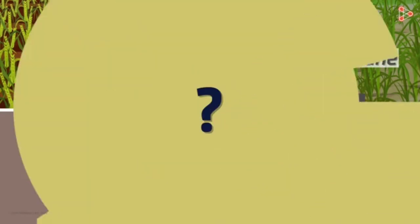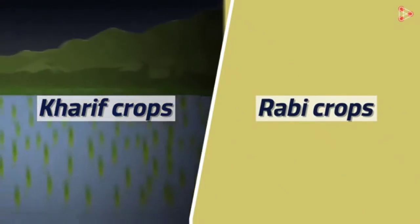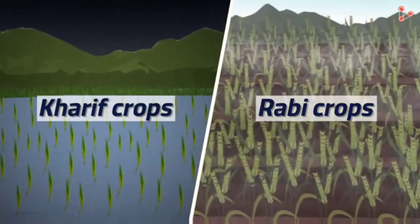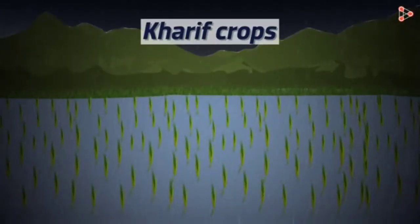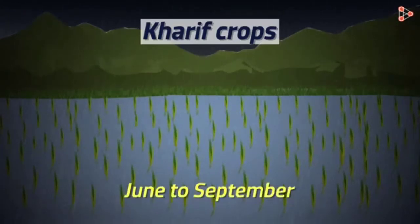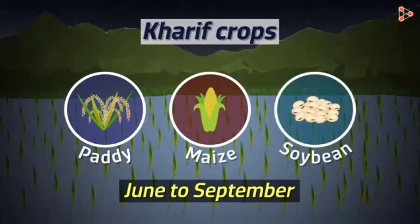Can you guess which two types of crops are grown in India? The two major crop seasons in India are the Kharif crops and the Rabi crops. The Kharif crops are sown in the rainy season, while the Rabi crops are sown in the winter season. The rainy season in India spans from June to September. Crops grown in this period include paddy, maize, and soybean, which require moisture and a large quantity of water.